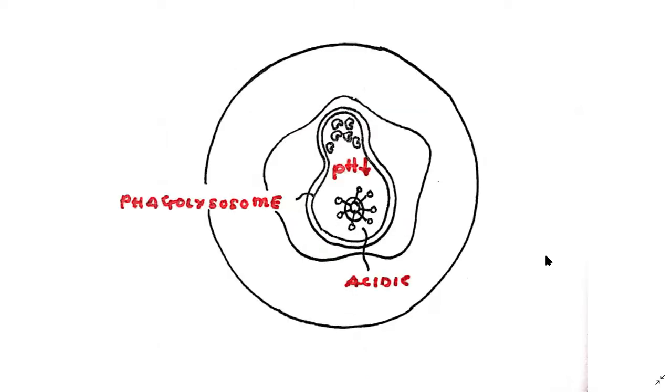Without fusing with the lysosome the phagosome wouldn't be able to do anything with the content inside, so the phagosome fuses with the lysosome to form a phagolysosome. Now the phagolysosome drastically lowers the pH of its internal environment. Lowering of the pH makes the environment inside the phagolysosome very acidic.